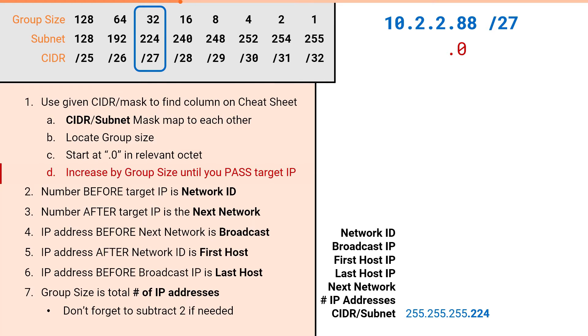So we have .0, then .32, .64, .96. And here we've passed our target IP of .88. At this point, we can just fill in all the remaining attributes.